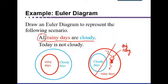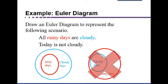In order to have all rainy days be cloudy, we need it to be the case that any X placed in the rainy day circle also falls inside the cloudy day circle. Any X inside the small red circle will automatically also be in the big blue circle. So the diagram on the left — with rainy days inside cloudy days — is how you actually represent 'all rainy days are cloudy.'